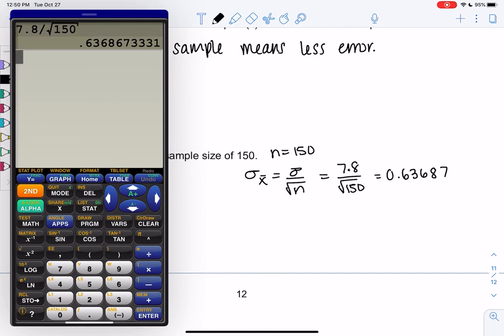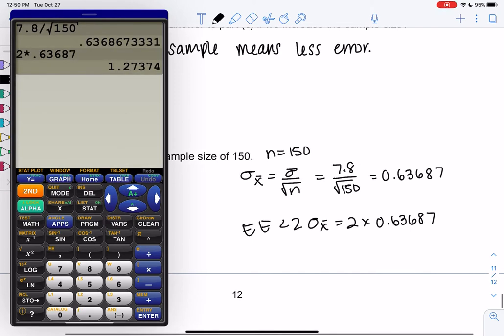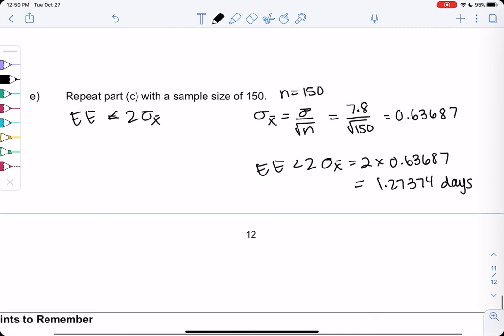The expected error would just be two times this, so two times 0.63687. Now it should be within 1.27374 days. We're getting closer and closer estimates to the average because we have less expected error.